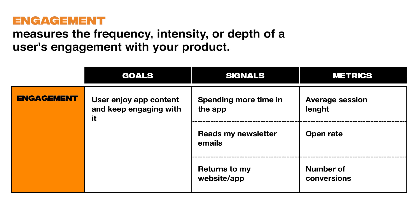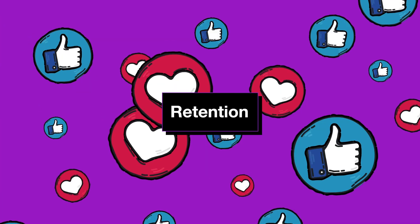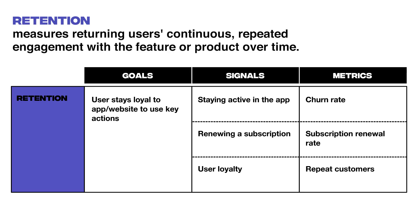Engagement measures the frequency, intensity, or depth of user engagement with your product — how many users visited the product in the last seven days or month, how often they visit a website, or what the open rate is for emails. Retention measures users' continuous, repeated engagement with a feature or product over time, tracking how often people use your product or feature or purchase new offerings.